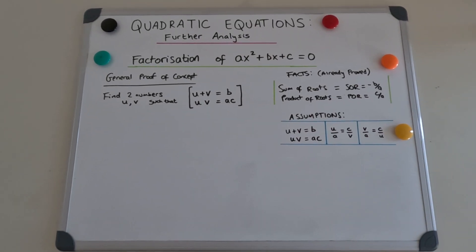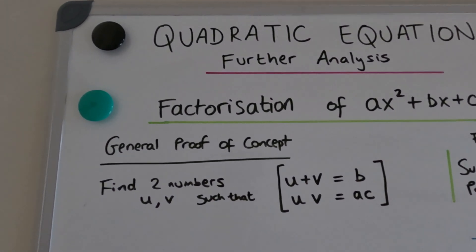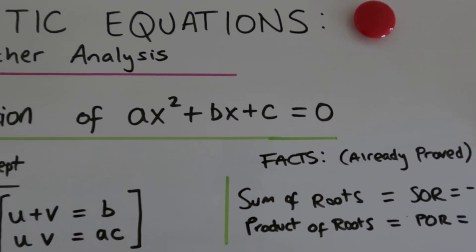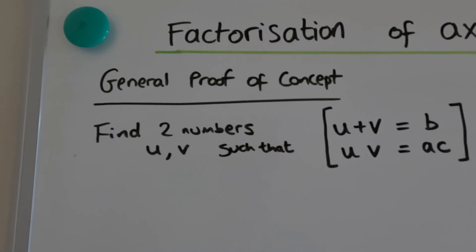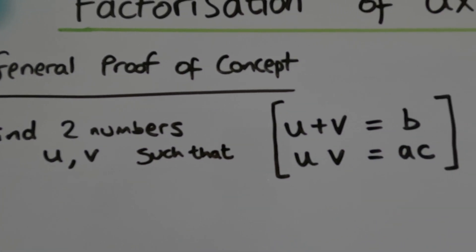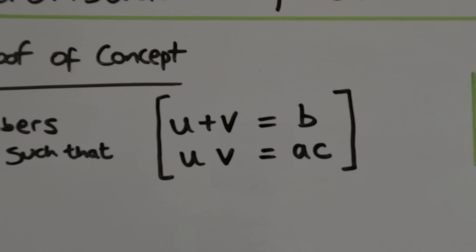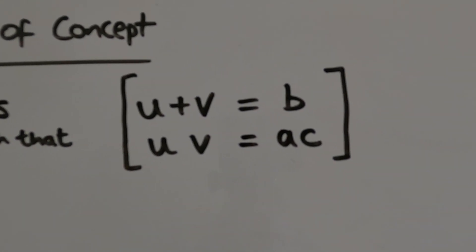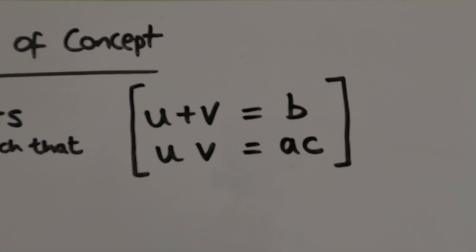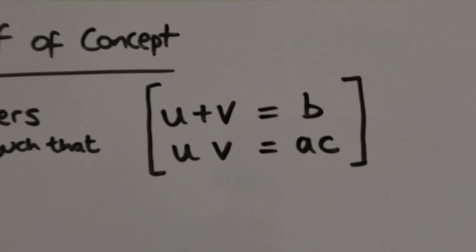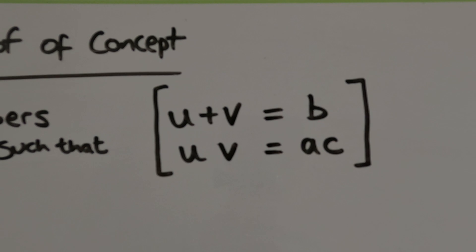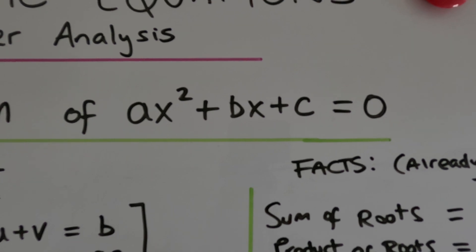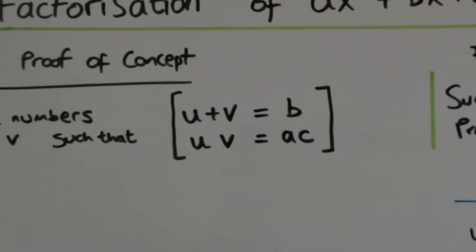Hello and welcome to my video on quadratic equations. In this video we're going to be doing the general proof of concept for factorization of ax squared plus bx plus c equals zero. The whole idea is that we find two numbers such that when you add them together you get b and when you multiply them together you get ac. So two numbers u and v such that u plus v equals b and uv equals ac. This is the factorization method we're using, and now we're going to prove that it will work no matter what a, b and c are in the equation. This method will always work, guaranteed.